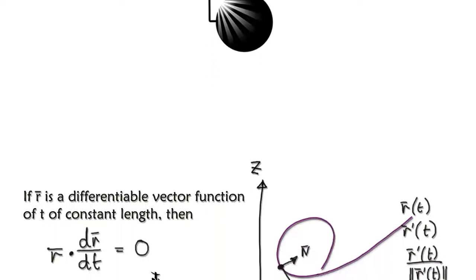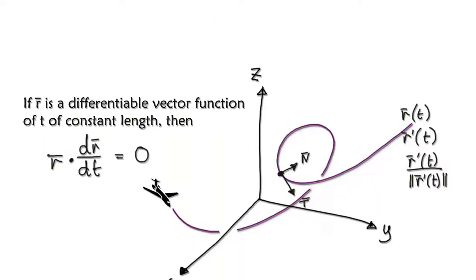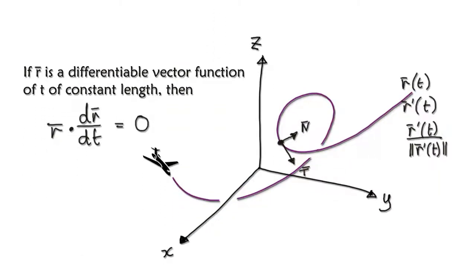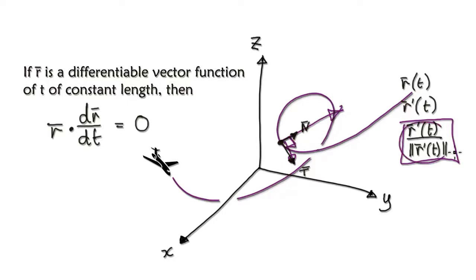Following on from some of the earlier videos, we were trying to understand why it is that when you differentiate a unit tangent, it gives you a new vector, and this new vector is always orthogonal to the unit tangent — not this tangent, not this tangent. So we're trying to understand this.